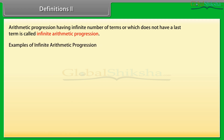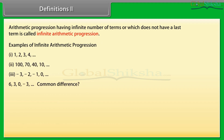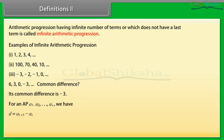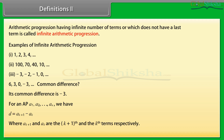Here are some examples of infinite arithmetic progressions. Look at this sequence — can you tell its common difference? Its common difference is minus 3. In general, for an AP A1, A2, ..., AN, we have d = A(k+1) − A(k), where A(k+1) and A(k) are the (k+1)th and the kth terms respectively.